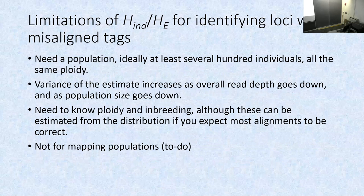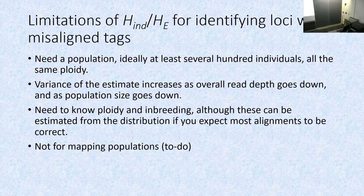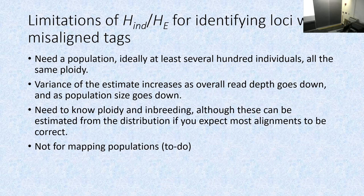You do need a large population to do this, so it won't help an RNA-seq experiment, but it's good for variant calling in big populations. It works well only above a certain read depth — if the median read depth is five or lower there's not much point. The higher the read depth, the less variance in the estimate. You need to know ploidy and inbreeding coefficient, but you can make a good guess from the initial distribution if needed.